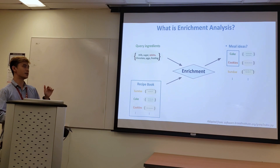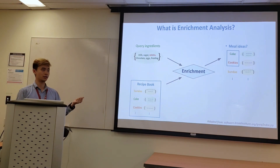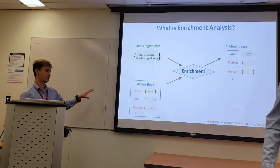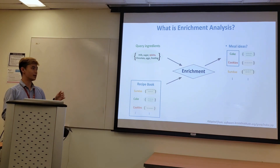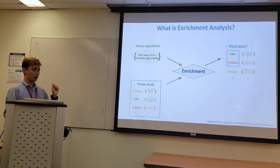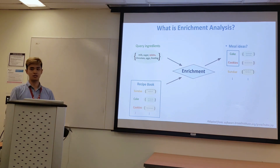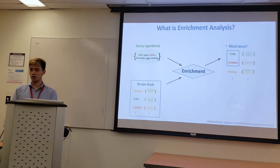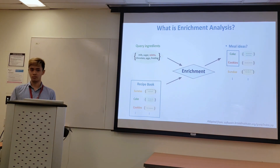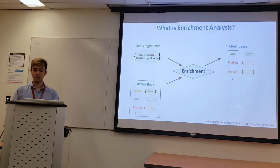The second point is that the enrichment results are dependent on the library being used — if we're using a dessert recipe book, then enrichment can only return desserts as the suggested terms. And the final point is that the quality of an enrichment result is dependent primarily on the highest ranked terms, just like how we do a Google search and only look at the first few websites. Biologists are usually mostly interested in the terms most likely to be relevant, not the entire ranking.